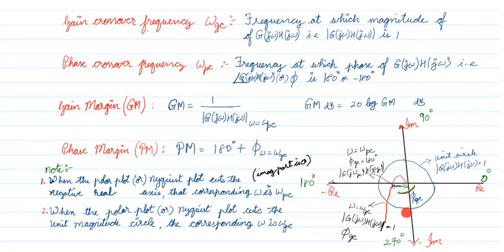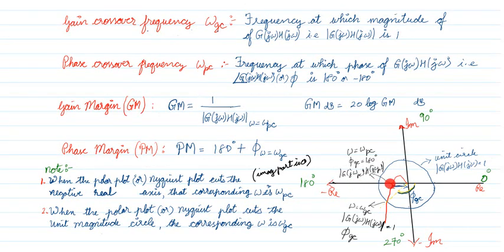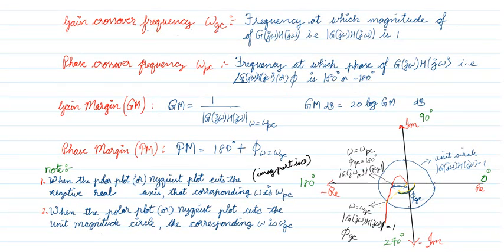We know the radial lines are the phase angle in a polar plot. So if this is ω_gc, the angle corresponding to this line is your φ_gc. Now we are going to see at what frequency the plot cuts the 180-degree line. This is the angle of 180 degrees; the frequency at that point is your phase crossover frequency, where the phase angle of G(jω)H(jω) is minus 180 degrees.